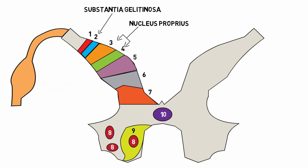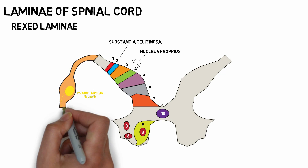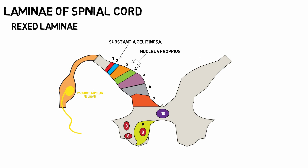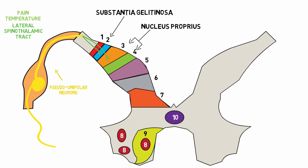This is the dorsal nerve root of the spinal cord, and the neurons present in it are the pseudo-unipolar neurons. These are the first order neurons of the spinothalamic tract. The peripheral process of these neurons carries information from receptors, and the central process relays this information into the spinal cord. The central process bringing information from pain and temperature receptors forms the lateral spinothalamic tract, relaying in the second lamina, whereas fibers from crude touch and pressure form the anterior spinothalamic tract and relay into the 3rd and 4th laminae.